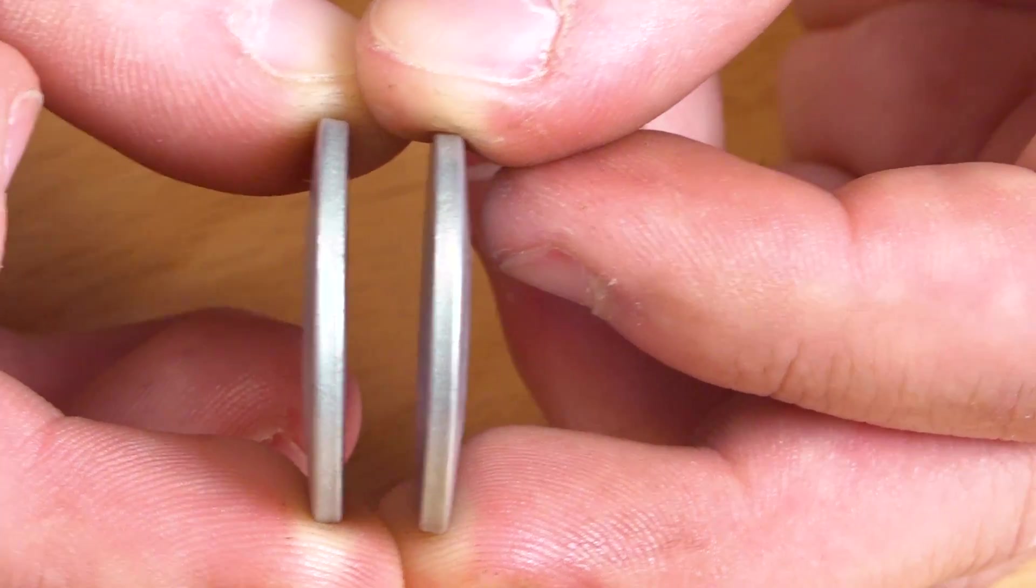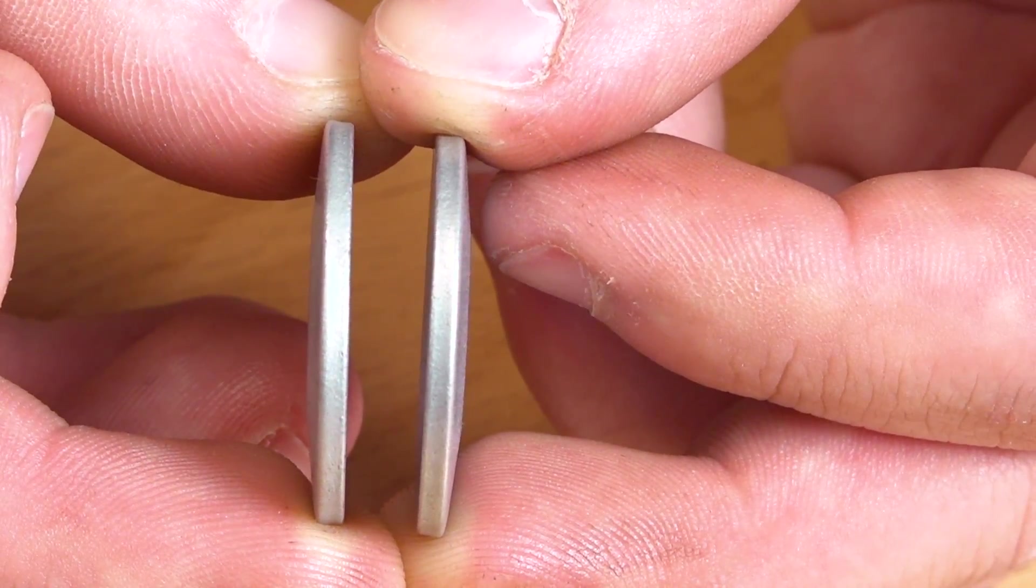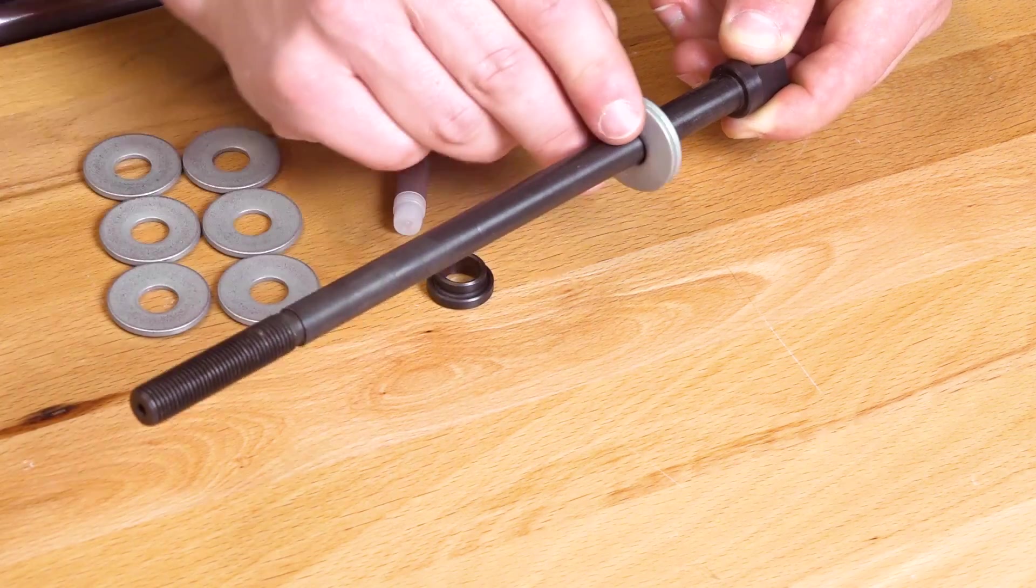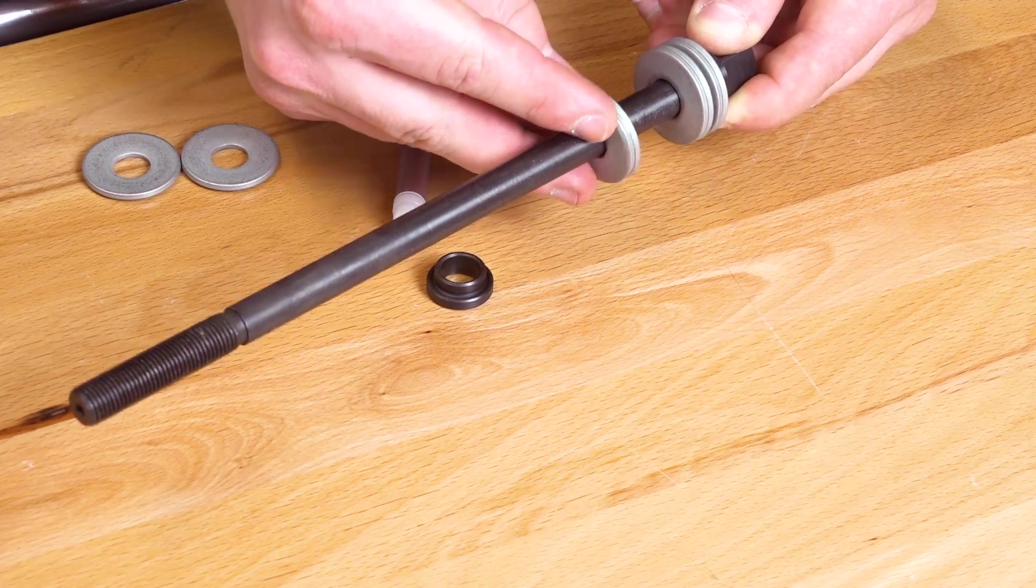Take two cupped washers and align them so their indents are facing outwards. Slide this pairing onto the drawbar. Repeat this for the three other sets.